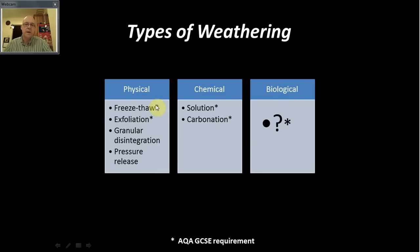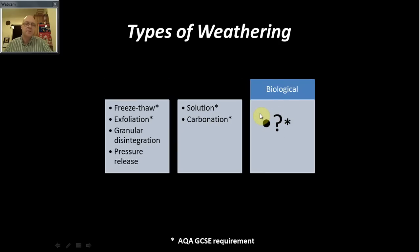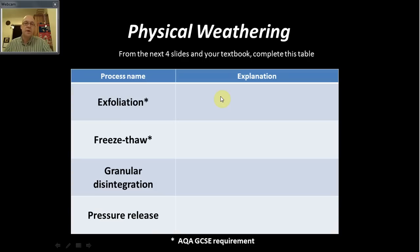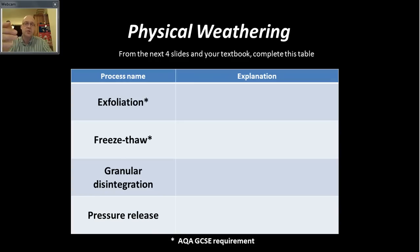The asterisks are for students doing the AQA GCSE, just to show which ones are needed. So let's go through these types of weathering. Weathering is the breaking down in situ of rock material — very different from erosion. We're not talking about fluvial, glacial, or aeolian removal; we're just talking about the breaking down of rocks.